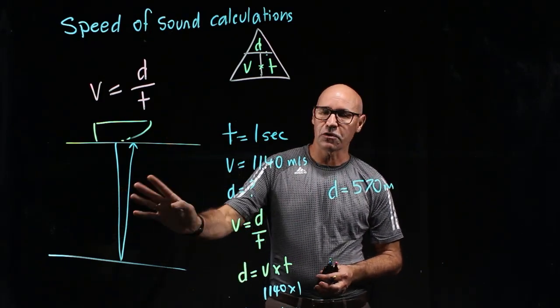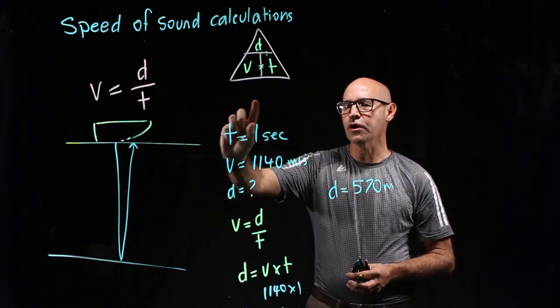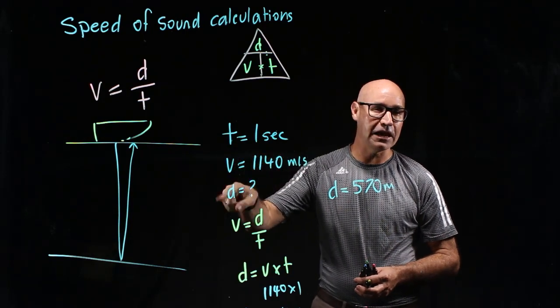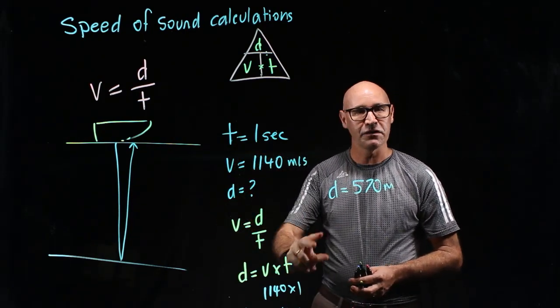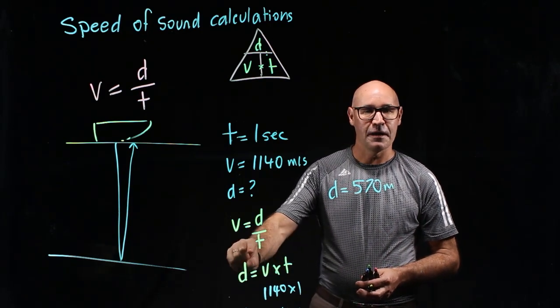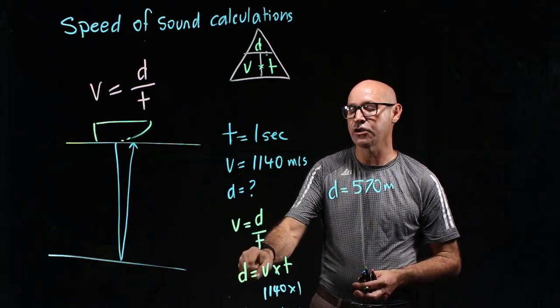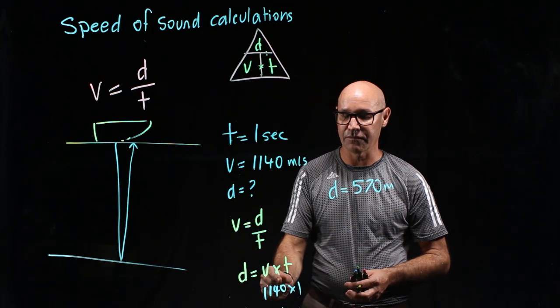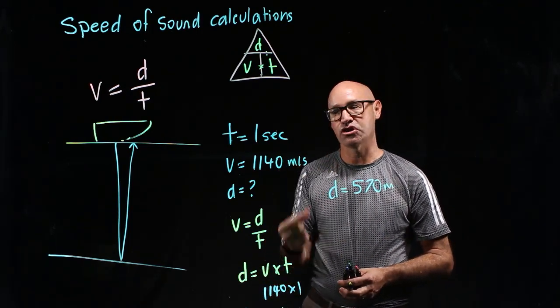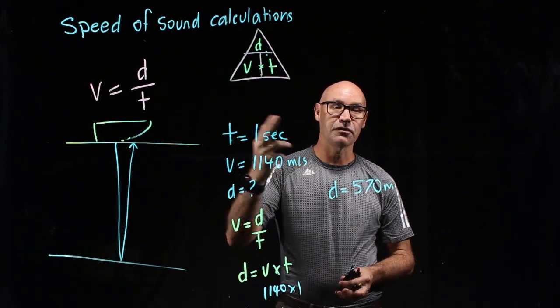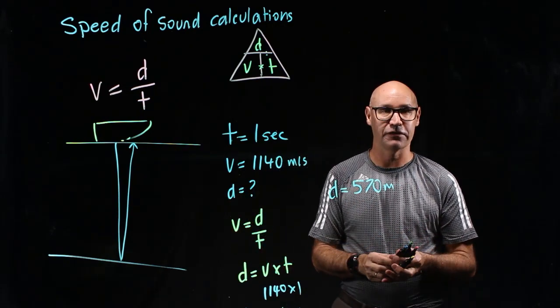We looked at the question. We worked out what we knew and what we needed to find out. We selected the right formula. We manipulated the formula so it was in the fashion that we needed so that our unknown was on the left-hand side by itself. We inputted our data and then we made our calculation. Then we did a check and realized that we had to go further and that's our final answer.